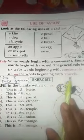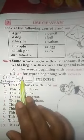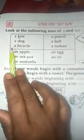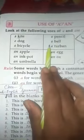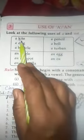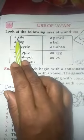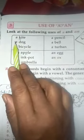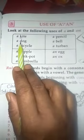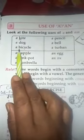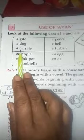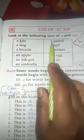See here: a kite, a dog, a bicycle, a pencil, a bell, a turban. Here you see p is consonant, b is consonant, t is consonant. That's why here we put a.